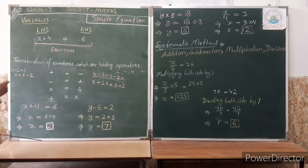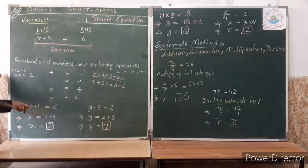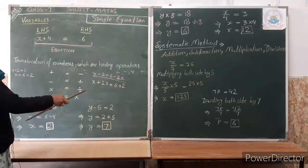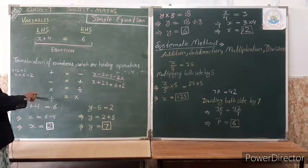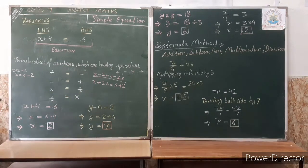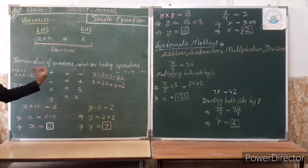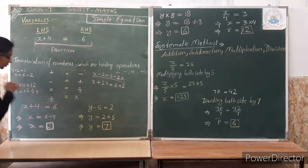In the same way, we handle multiplication and division. We change the sign: if we take a multiplied number to the right-hand side, then it becomes divisible — it becomes division. And if we take a divided number to the other side, it will multiply. For example, x multiplied by 4 is equal to 12. So 4 goes to the right-hand side and becomes division: x is equal to 12 divided by 4.